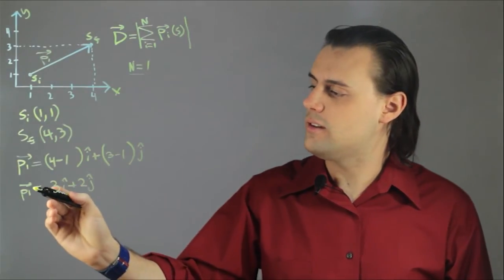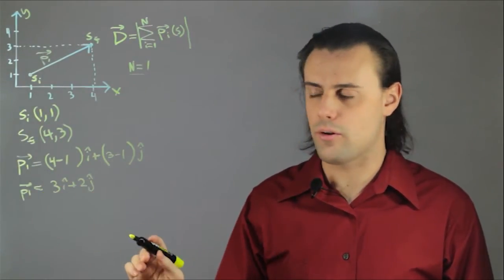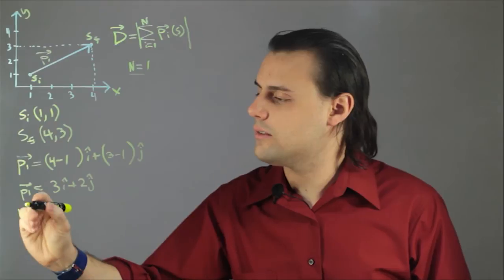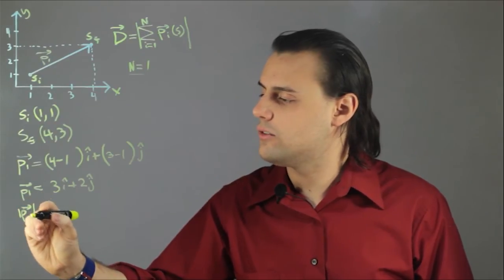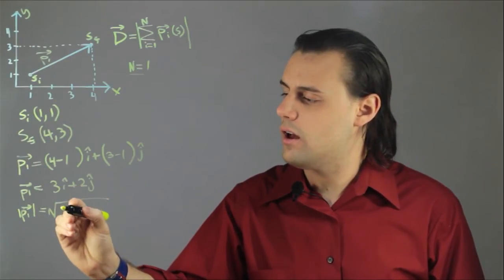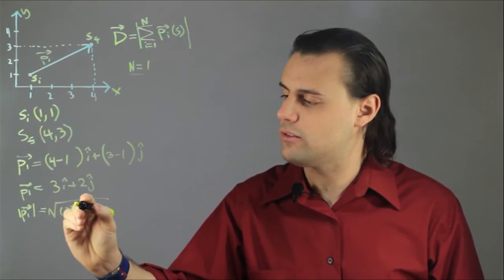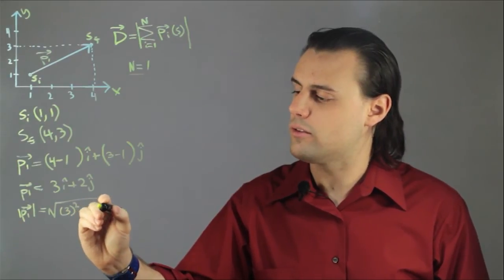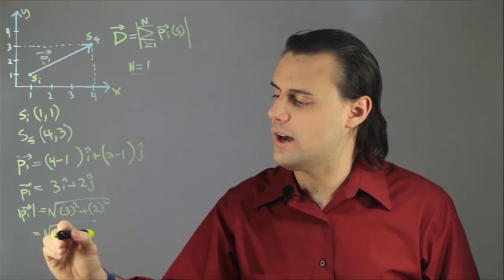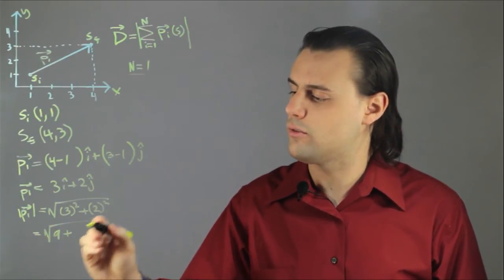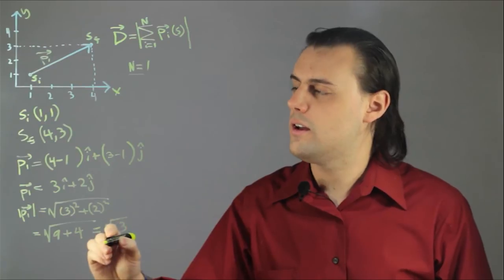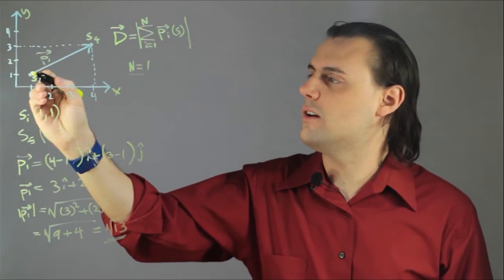and I can calculate the magnitude of this displacement by using the distance formula. The magnitude of the p1 vector is equal to the square root of the x component squared plus the y component squared. This is equal to, for my example, 3 squared is 9, and I add to that 2 squared, which is 4, so I end up with the square root of 13.